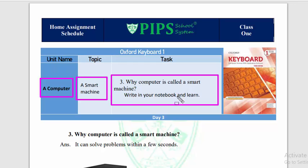So the question is: Why computer is called a smart machine? The answer is: It can solve problems within a few seconds. Computer smart machine is liye kaha jata hai kyun ki ye kuchy seconds mein problem ko solve kar deti hai.